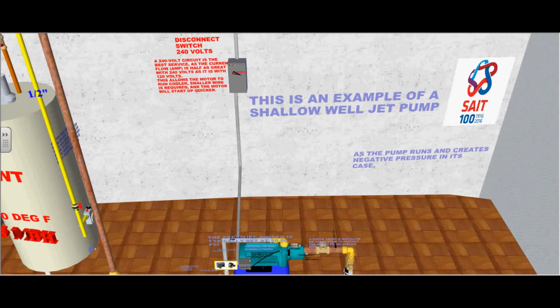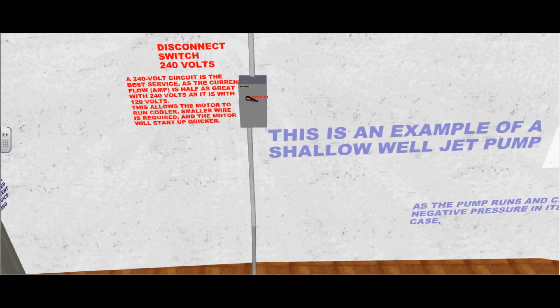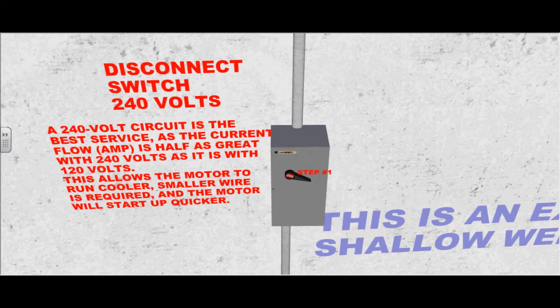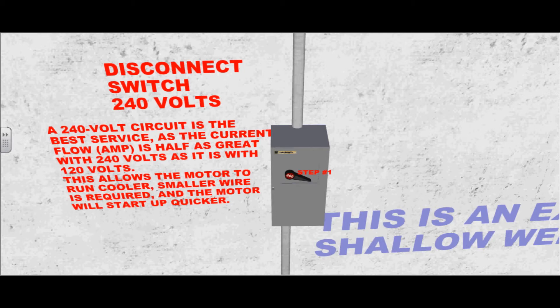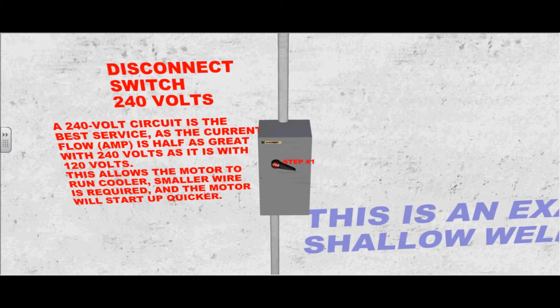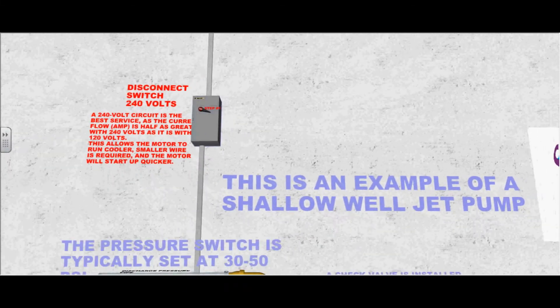This is our disconnect switch. It is ideal to use 240 volts as you get better amperage. This allows the motor to run cooler. Smaller wiring is required and the motor will start up quicker.